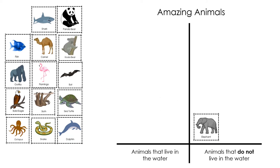An elephant does not live in the water, but a shark does. These two animals are different because one lives in the water and one lives on land. I can continue to sort and classify the animals.